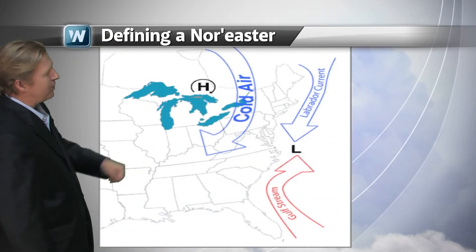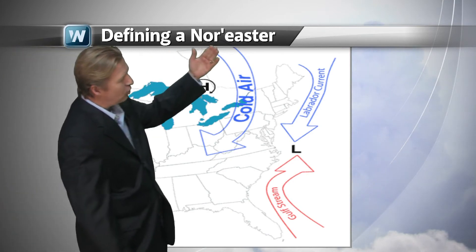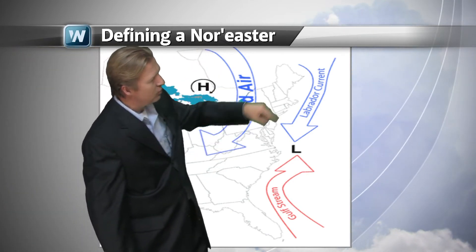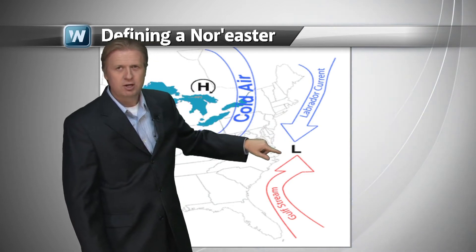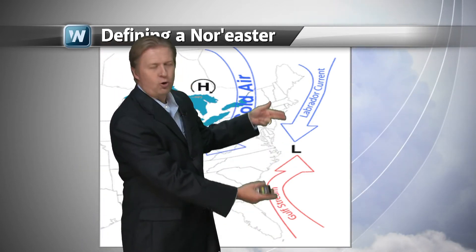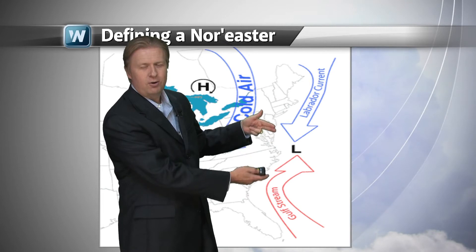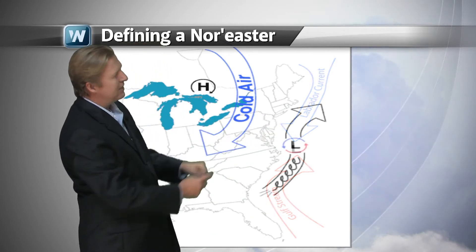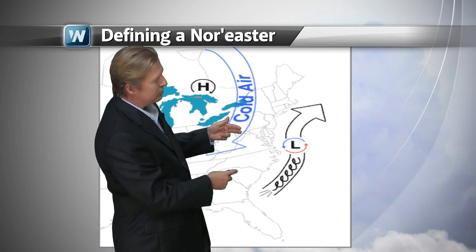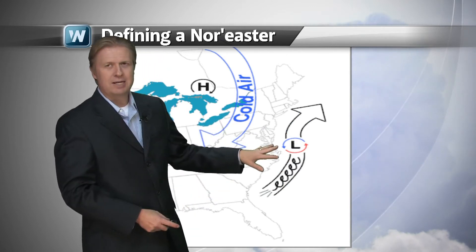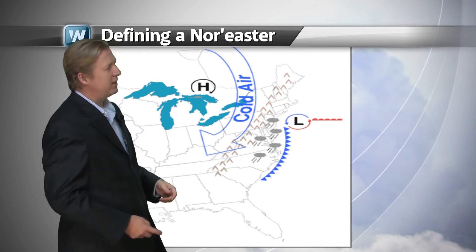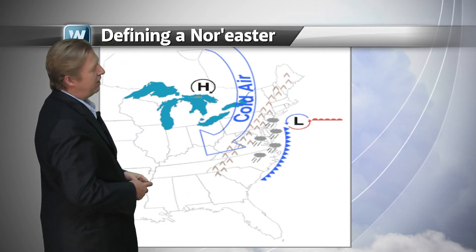Here are usually the ingredients that need to come together. You need to have the cold air coming out of parts of eastern Canada. You also need to have the Labrador current coming in from the north, then the Gulf Stream meeting up — cold air, warm air. That's the recipe. That cold air and warm air starts to develop a low-pressure system, just like our latest system forming off the Carolina coast, then making its way to the northeast very quickly.